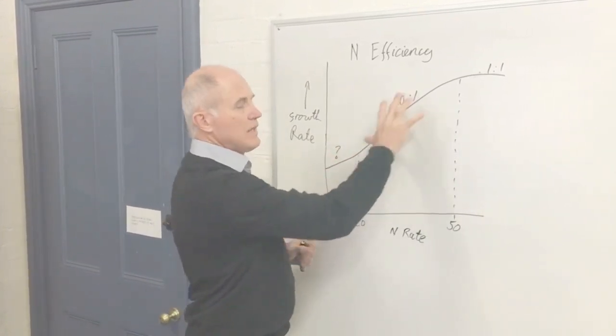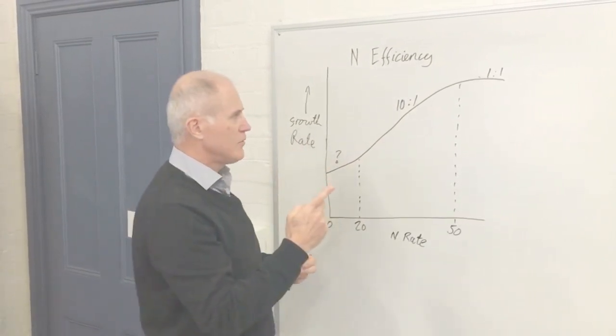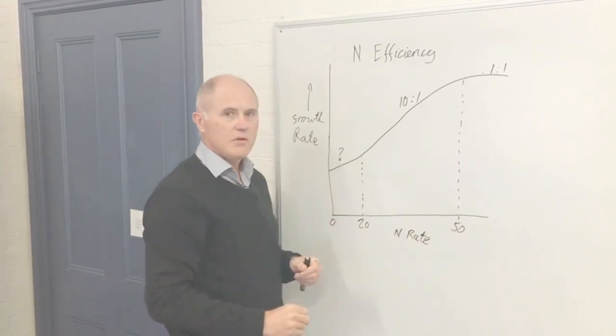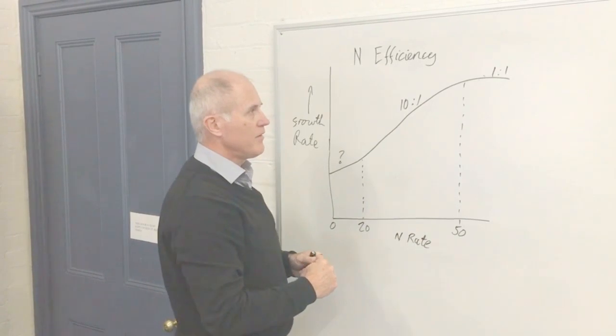We talk of 10 to 1, so you're getting 10 kilograms of extra pasture growth for every one kilogram of nitrogen you invest. If you're putting 50 kilograms of nitrogen on, you're going to get 500 kilograms of extra dry matter grown on the farm.